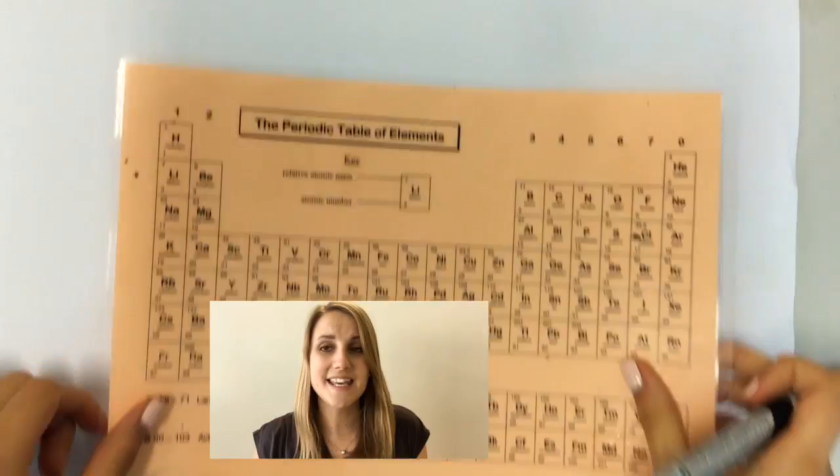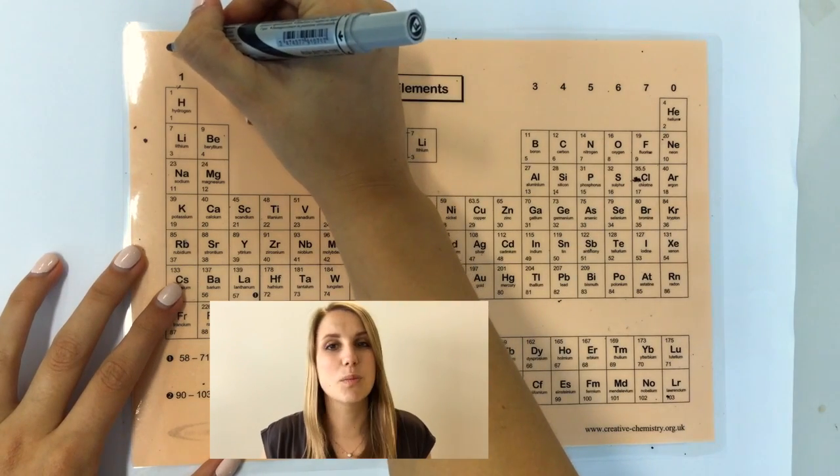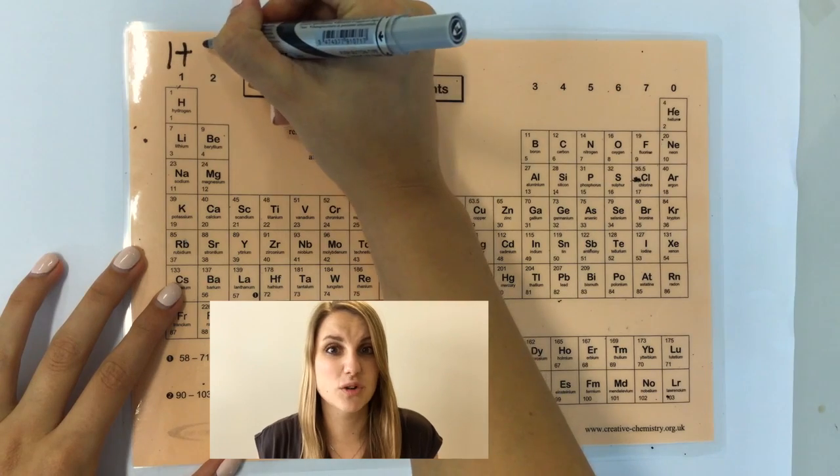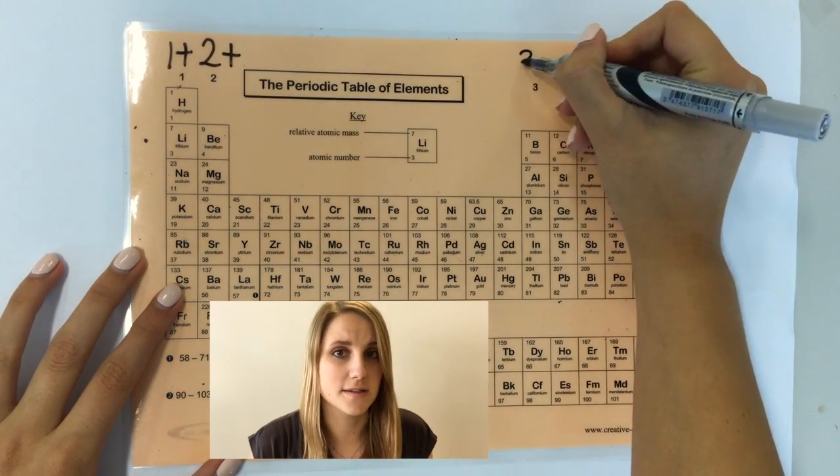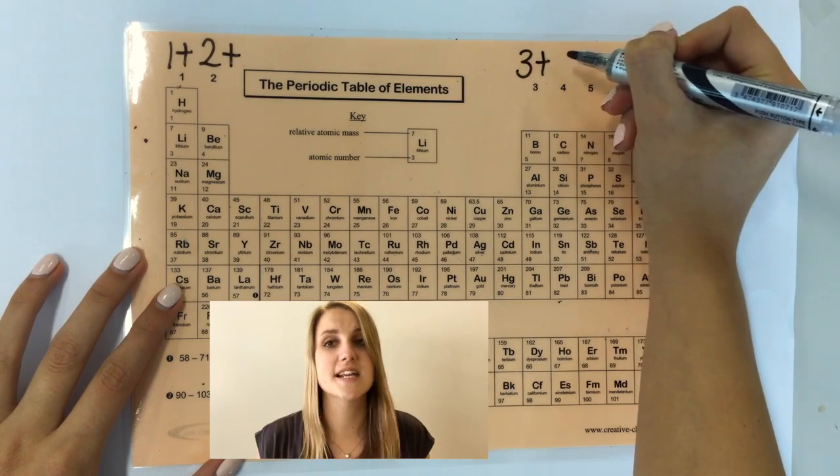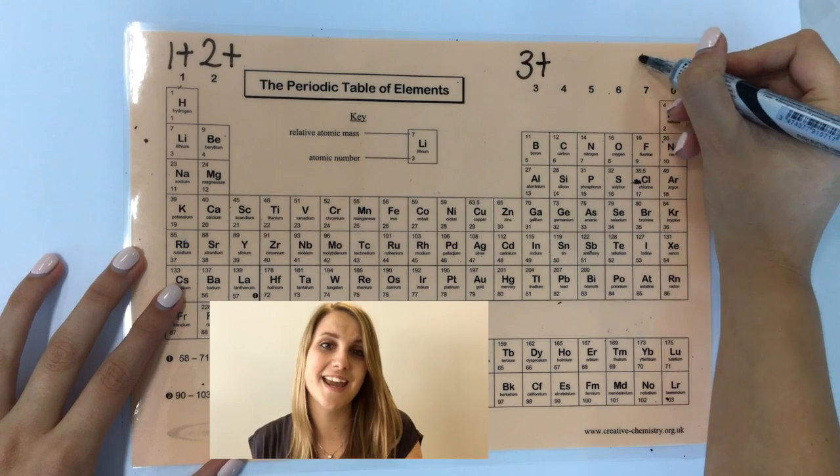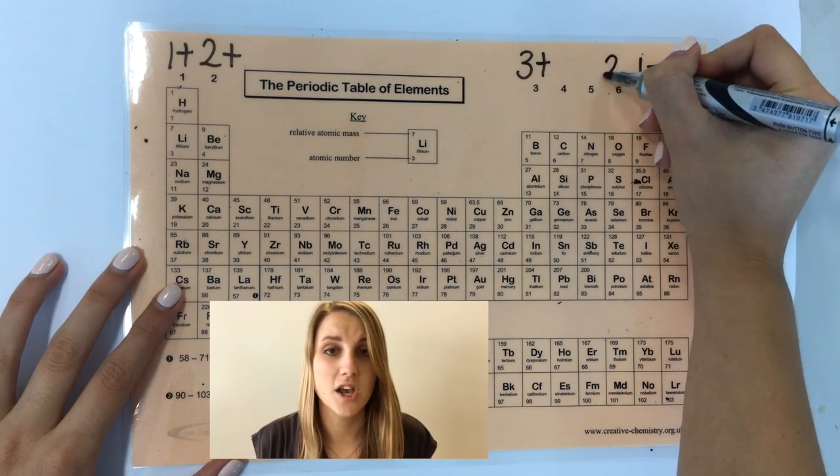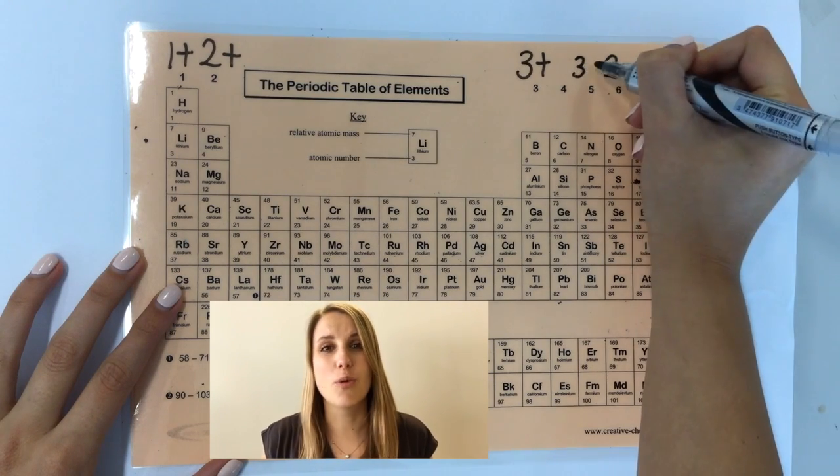Have you spotted the pattern with the charges yet? Here's your periodic table. The rule is simply this: If an element is in group 1, it always forms a 1+ ion. If it's in group 2, it forms a 2+. In group 3, it forms a 3+. By contrast, if you go across to group 7, they want to gain an electron. So group 7 always form 1-, group 6 form 2-, and group 5 form 3-.